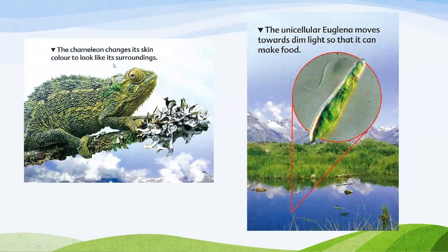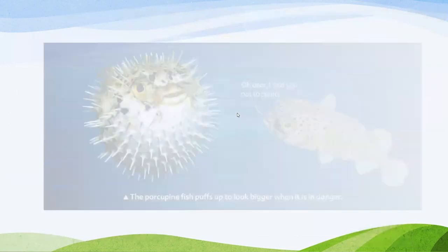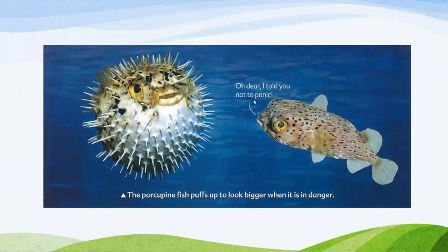The chameleon changes its skin color to blend into its surroundings. The unicellular Euglena moves toward dim light so that it can make food. The porcupine puffs up to look bigger when it is in danger. All these are types of adaptation — and the porcupine's behavior is a behavioral adaptation.